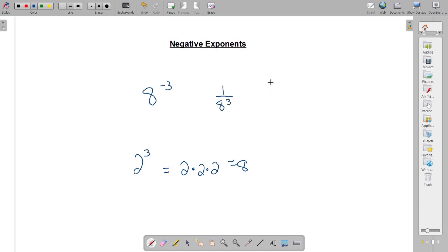So another example, if I have 2 to the negative 3 power, that is equivalent of taking 1 over 2 cubed. So what I usually do if I see a negative, that means I just put it in the denominator.